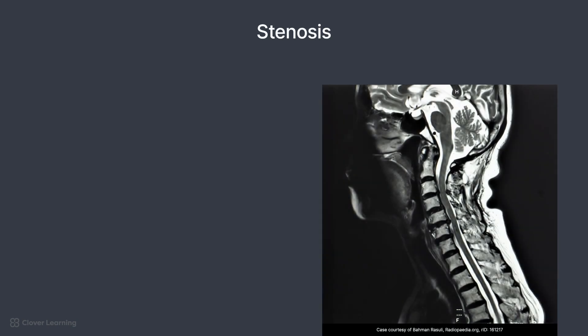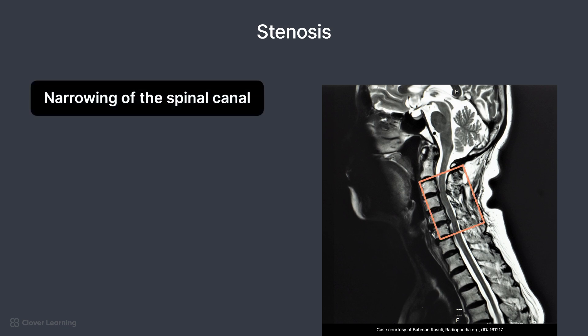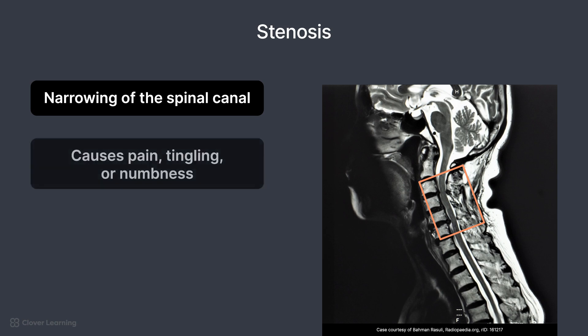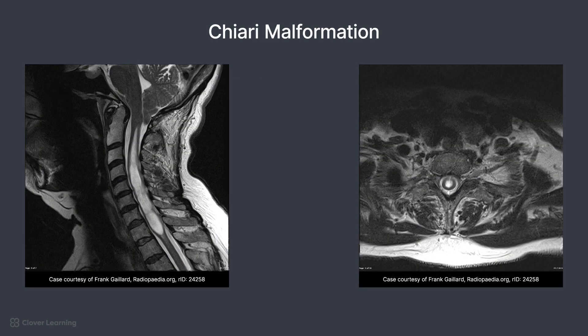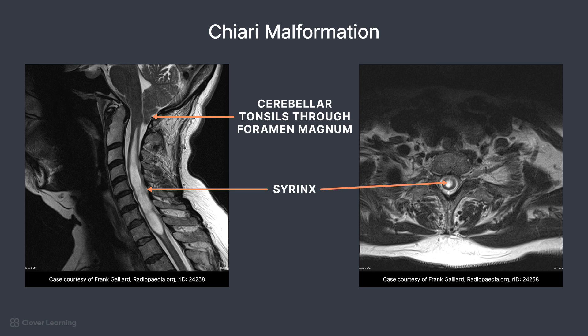Finally, there are pathologies associated with the spinal canal that are important to know. Stenosis is a pathology a technologist would routinely see — this is a narrowing of the spinal canal which puts pressure on the spinal nerves and can result in pain, tingling, or numbness. On a T2-weighted image, this will appear as a reduced amount or narrowing of CSF in the areas around the stenosis. A Chiari malformation occurs when the cerebellar tonsils protrude through the foramen magnum. A secondary pathology is the syrinx — a hollow tube formed in the spinal cord that fills with CSF fluid.